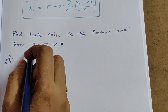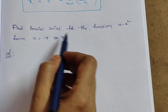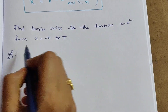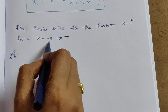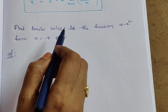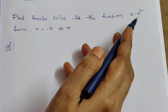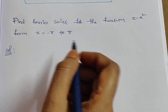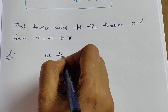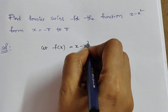Here the problem is: find the Fourier series for the function x minus x square in the interval minus pi to pi. Let f of x equal to x minus x square.